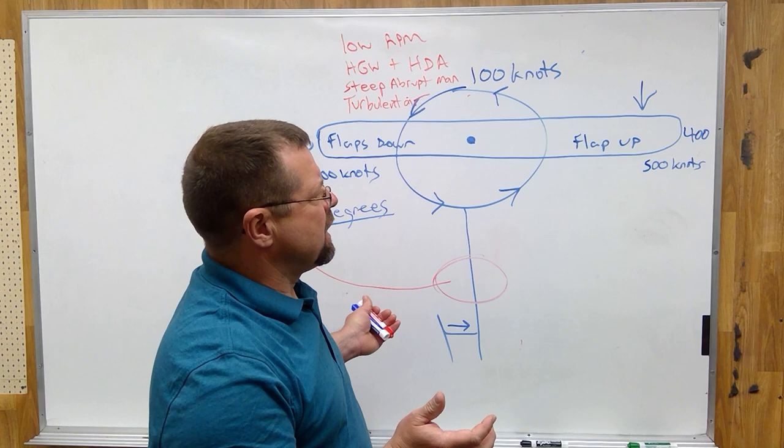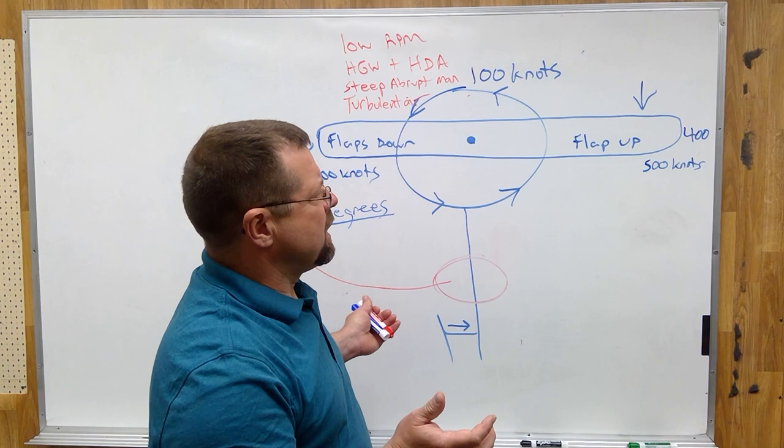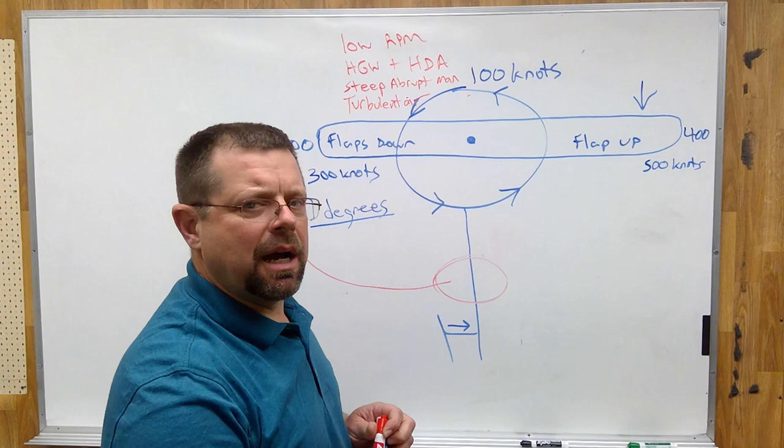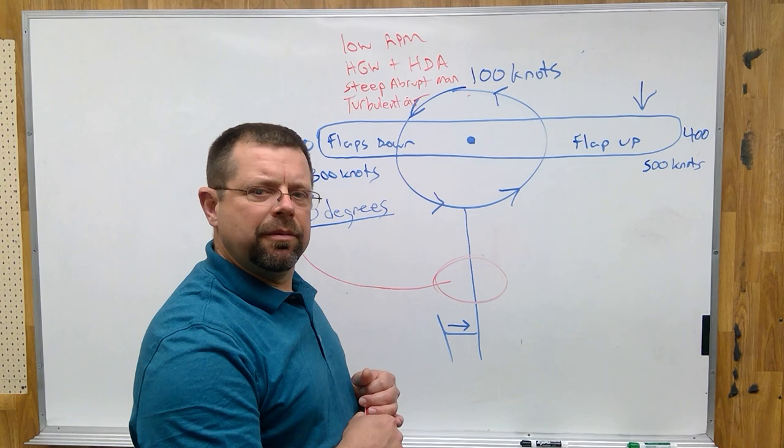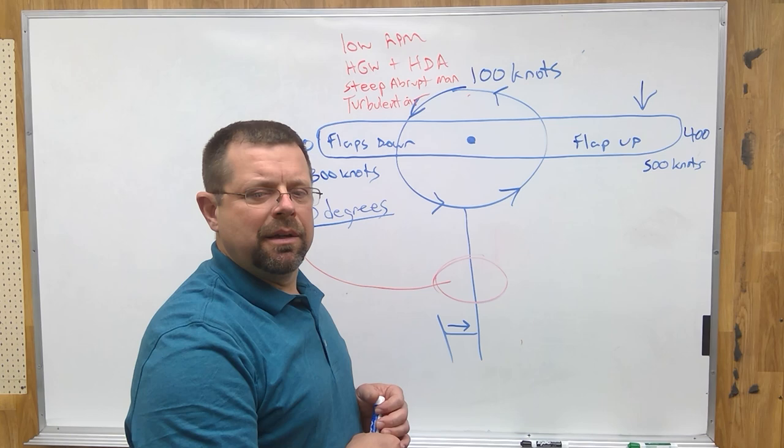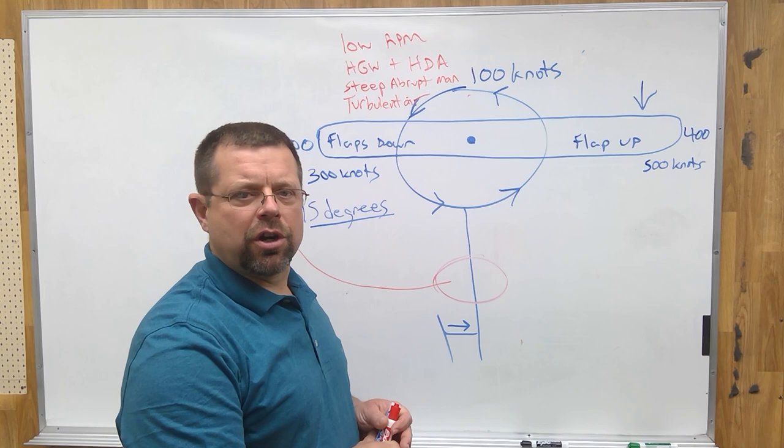So this covers a lot: dissimetry of lift, flapping, retreating blade stall. Remember, the VNE, or the never exceed speed in a helicopter, is partially due to retreating blade stall. But it is not the only reason that we have a never exceed speed. It is also because the manufacturer has determined that speed as being the safe speed for that helicopter for other reasons as well, such as structural integrity.